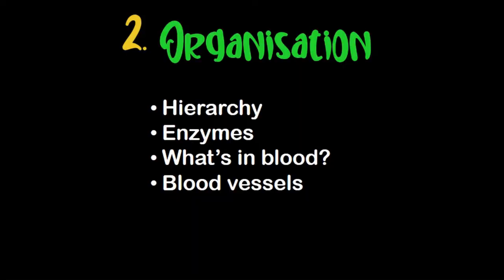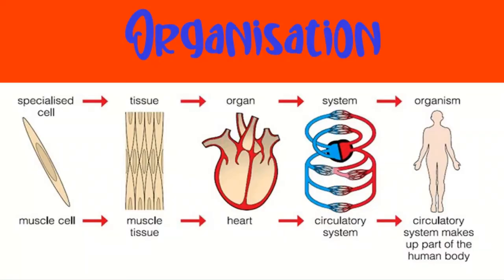Organisation. A group of cells working together to perform the same function is a tissue. A group of tissues working together is an organ. A group of organs working together is a system. All the systems together make the whole organism. So from smallest to largest: cell, tissue, organ, system, organism.